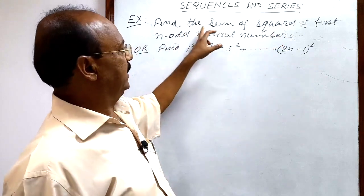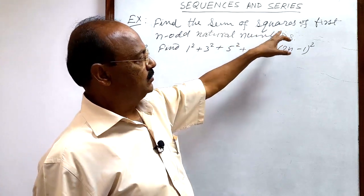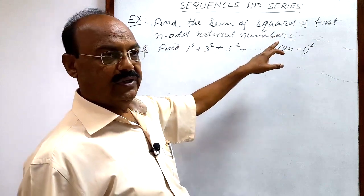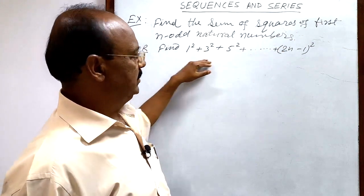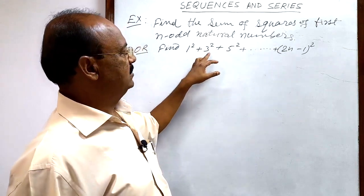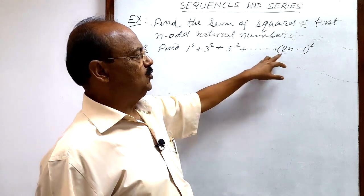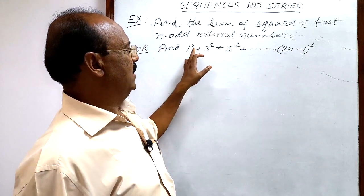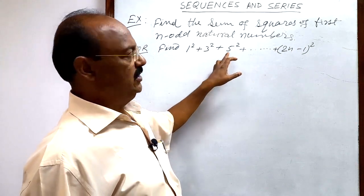Find the sum of squares of first n odd natural numbers. Or this expression: find 1² + 3² + 5² + ... + (2n-1)². Sum of squares of first n natural numbers.